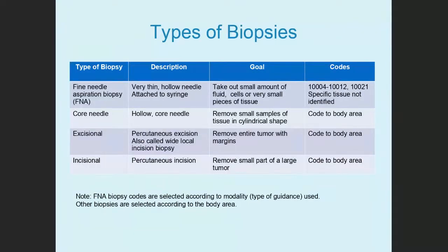First, let's look at the differences between fine needle aspiration biopsies and other types of biopsies. A fine needle aspiration biopsy, abbreviated as FNA, uses a very thin hollow needle attached to a syringe. It takes out small amounts of fluid, cells, or very small pieces of tissue. These are coded with 10004 to 10012 and 10021. Note that these codes are just for fine needle aspiration biopsies — they don't specify which tissue it's taken from.